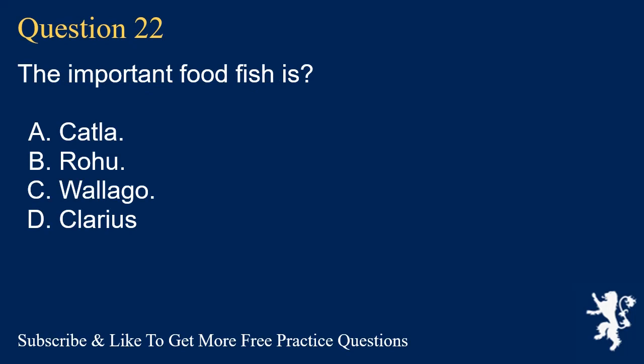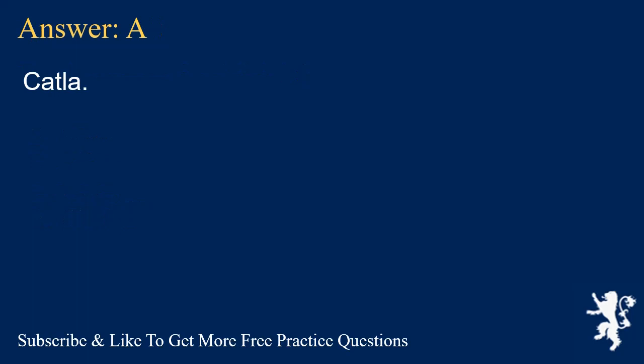Question 22. The important food fish is? A. Catla. B. Rohu. C. Walego. D. Clarius. Answer: A. Catla.